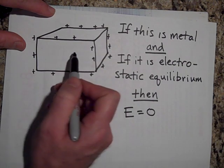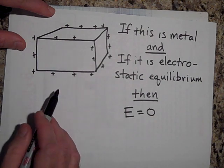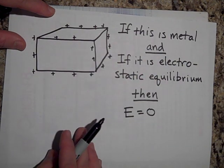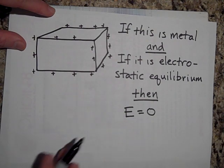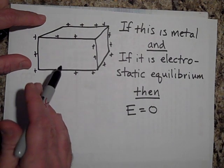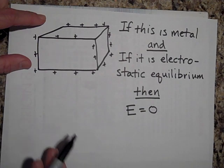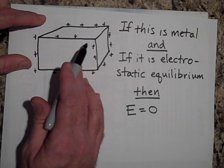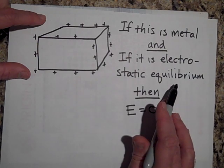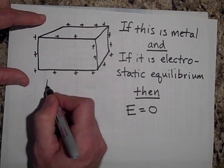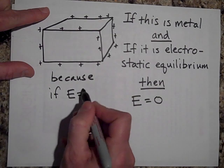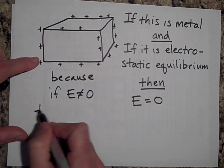Here's why: if there was a field inside, there are charges in there that are free to roam, and so they will move. What moves charges? An electric field. So if you look at a metal and see all the charges stationary, there must not be a field in there. If you put a field in there, the charges will move around until there's no more field. If E did not equal zero, the charges would be moving.